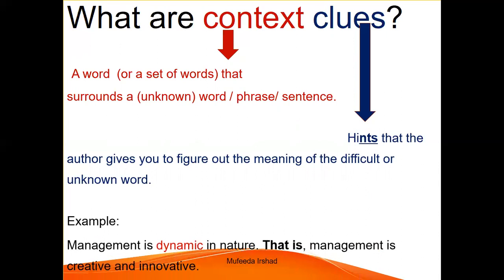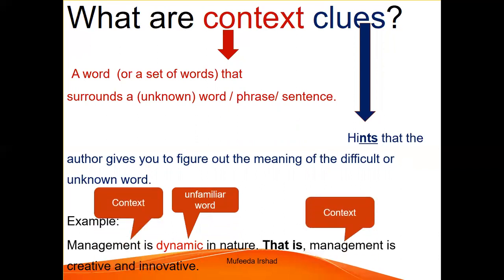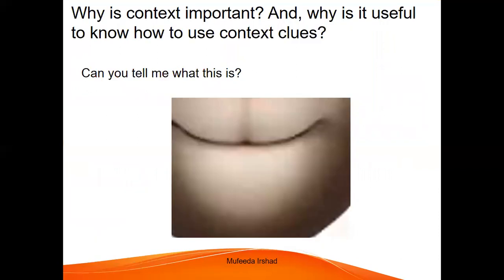Look at this example. For instance, if the unfamiliar word is 'dynamic,' those words that come before and after 'dynamic' could be considered context. So the context of 'dynamic' is what comes before as well as what comes after it. I'll use a picture to show you what context means and to tell you why it is useful to use context clues.